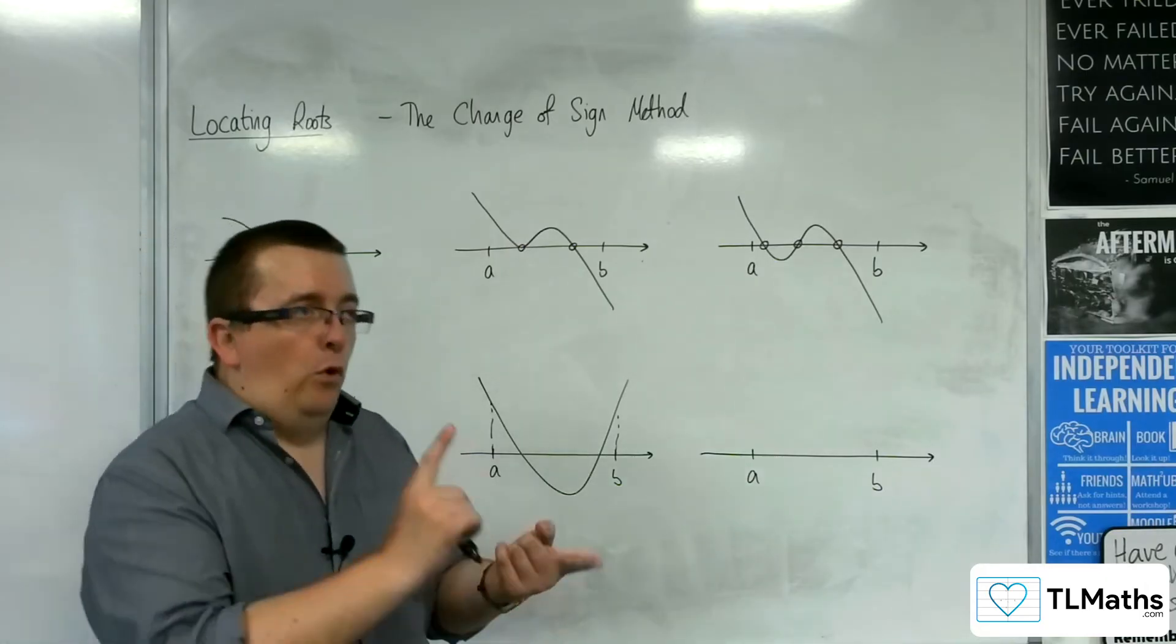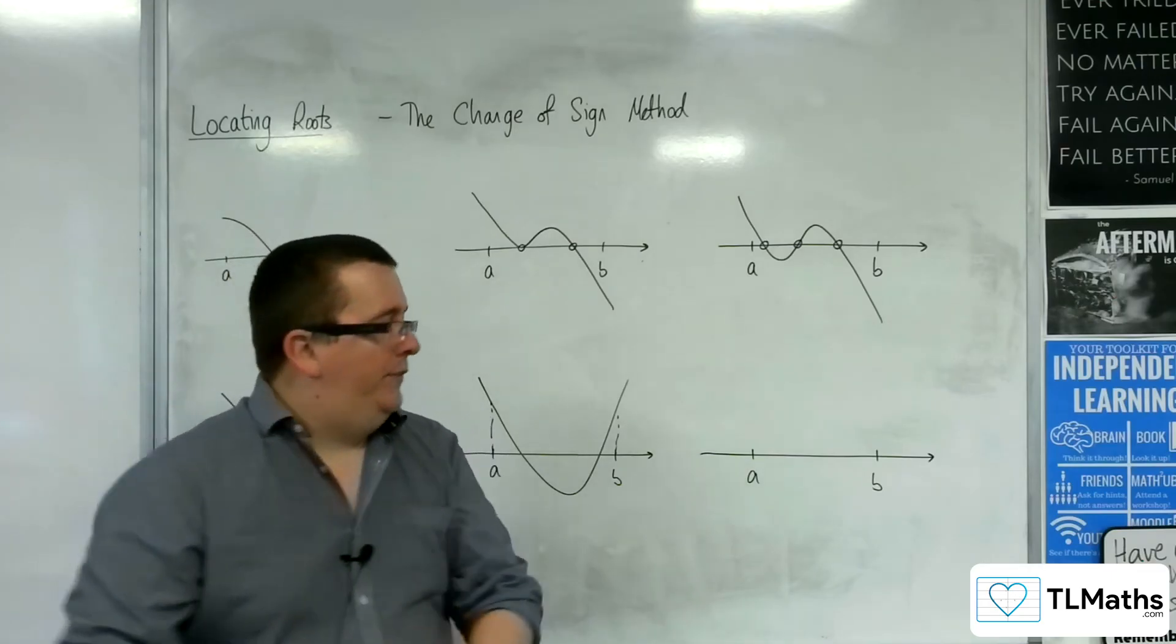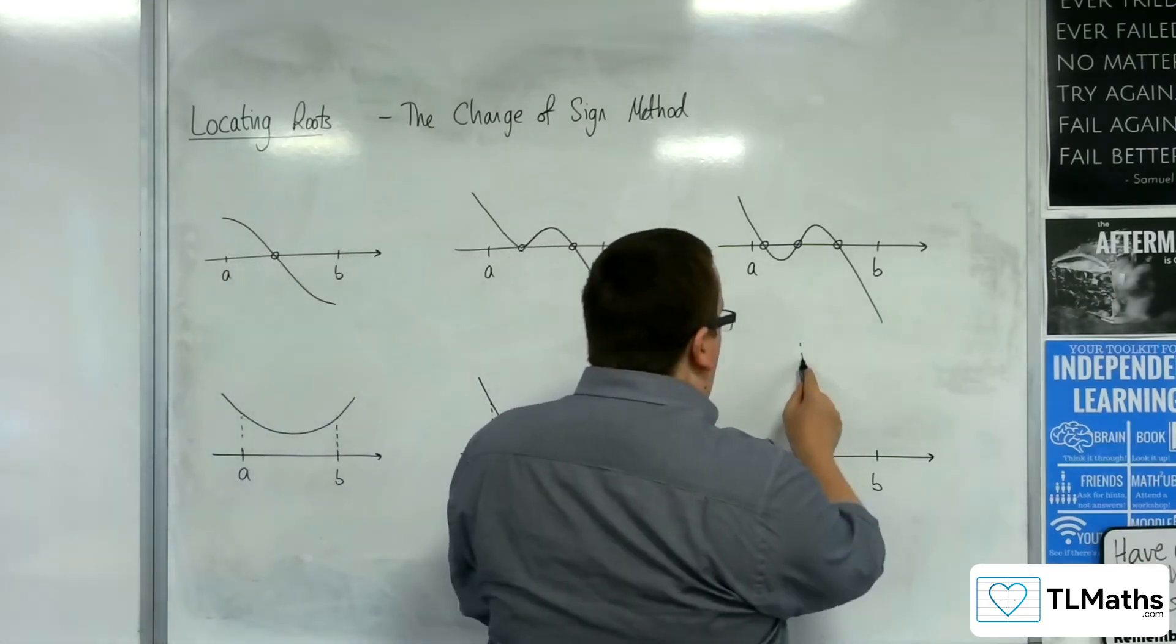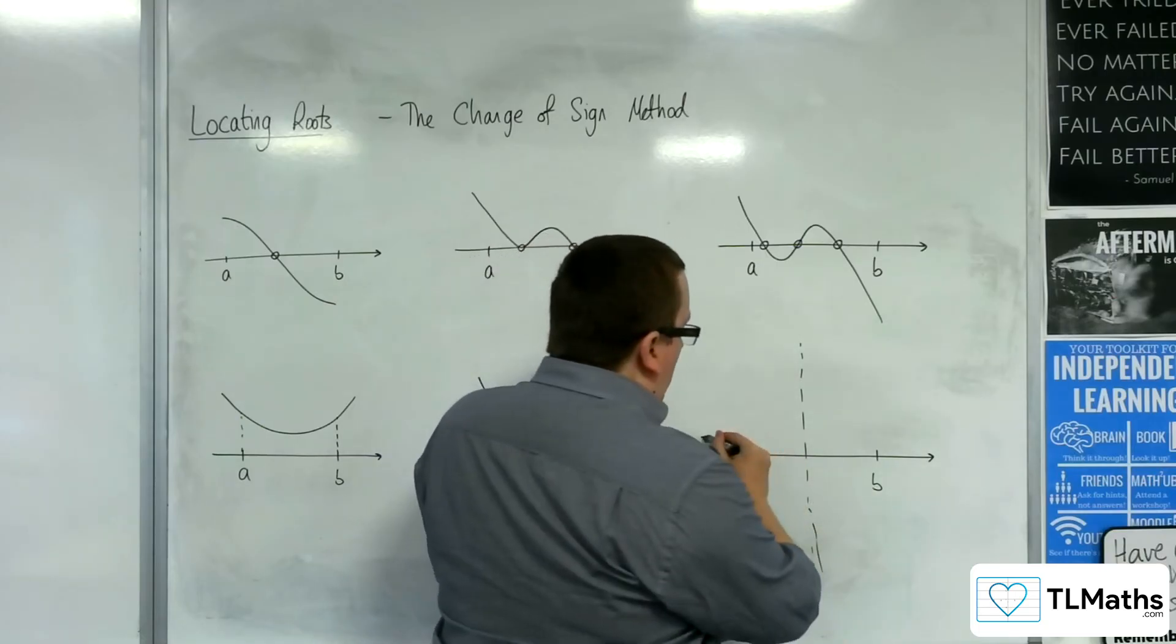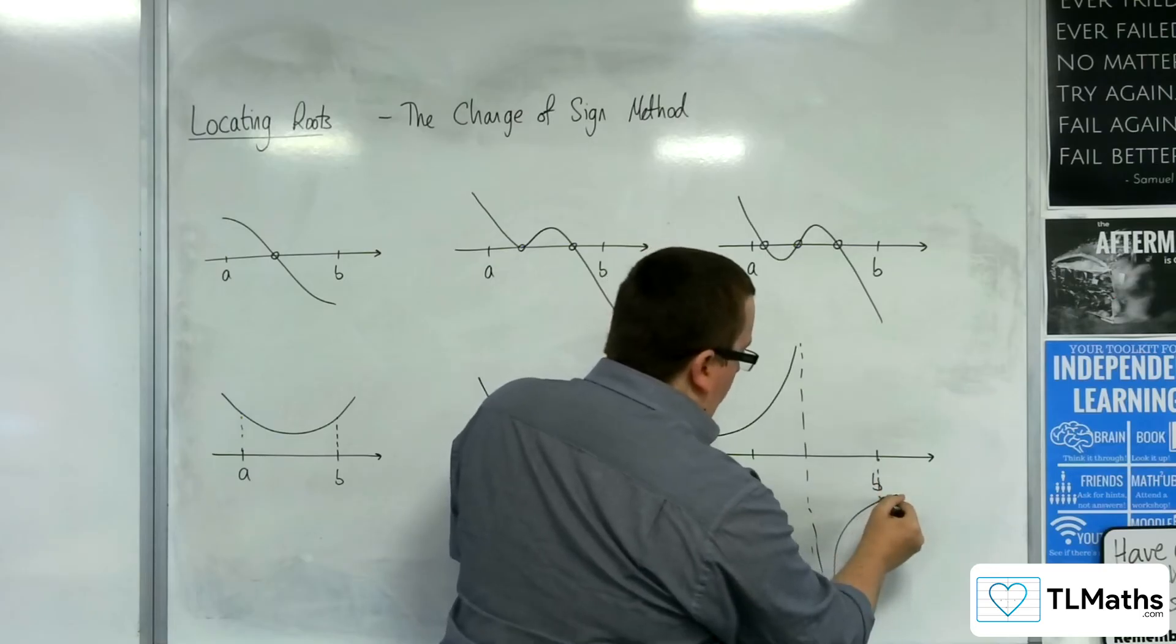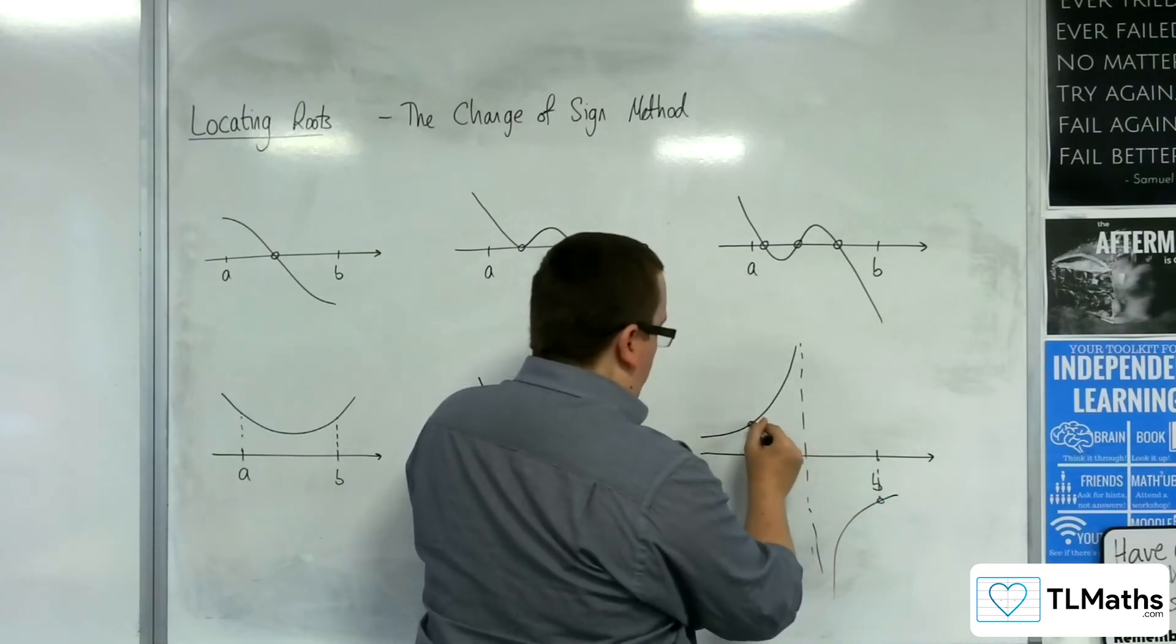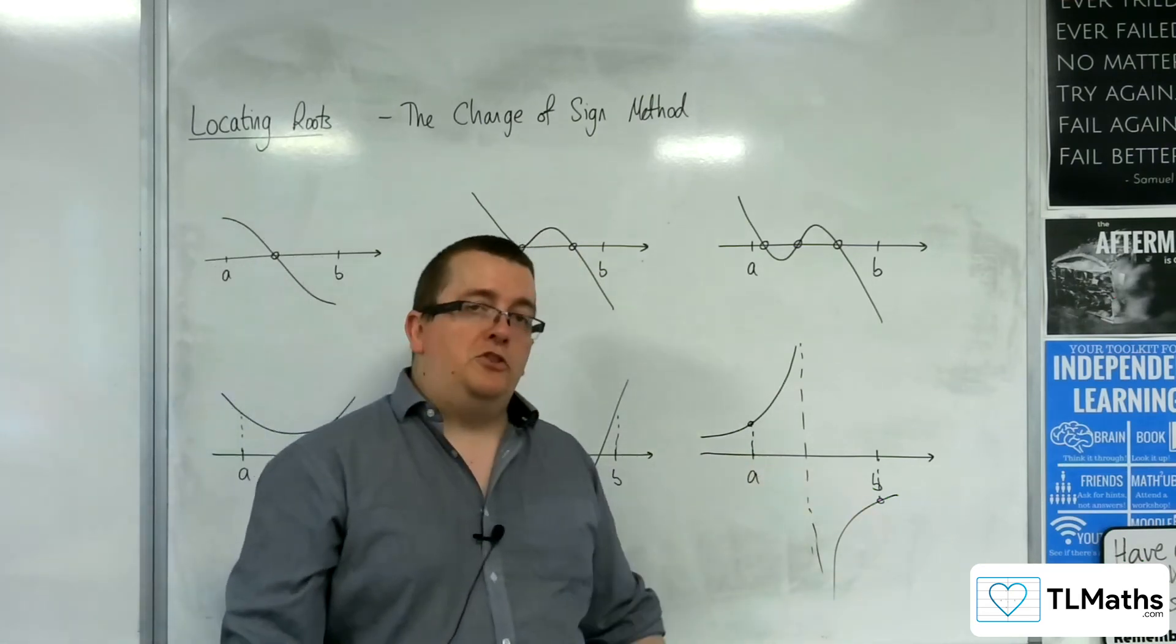Likewise, if there was a change of sign, but the curve is discontinuous, we saw an example of this where you could have an asymptote down the middle. And so you've got something that looks like this. There is a change of sign, but there is no root in between those two points.